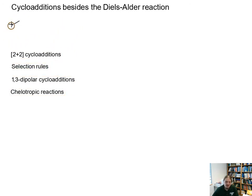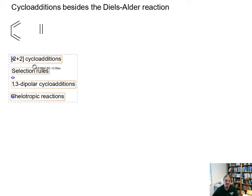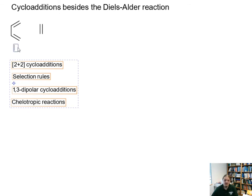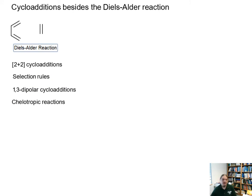But I do want to start off this video with a reminder of one of the most important types of cycloadditions and that is the 4+2 cycloaddition, the Diels-Alder reaction. I will be using the Diels-Alder reaction to compare these other types of cycloadditions too as we go along.